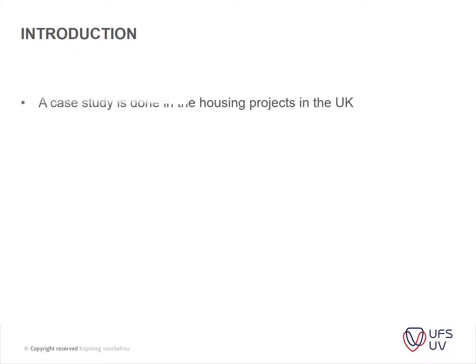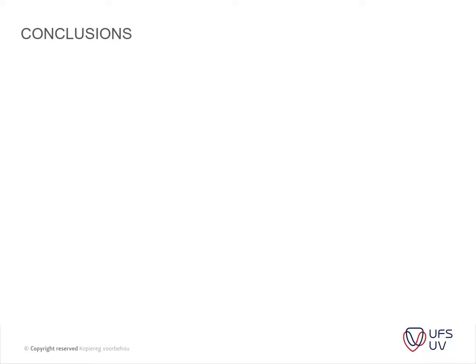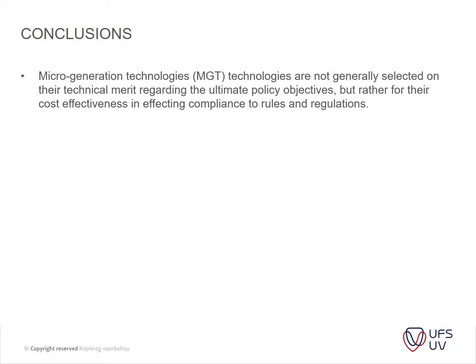This chapter is all about a case study done in the UK. It specifically looks into regulation towards sustainable buildings — regulations were imposed in the UK to make buildings more sustainable. What they did was retrofit houses with new micro-technologies like solar geysers and heat pumps. What they basically concluded is that these technologies are not generally selected on their technical merit regarding the ultimate policy objectives.